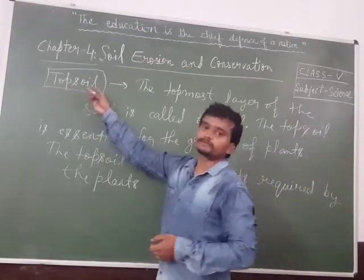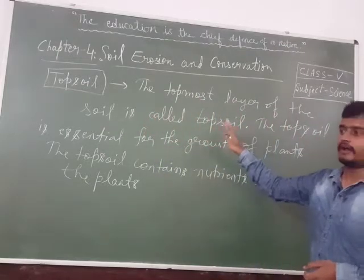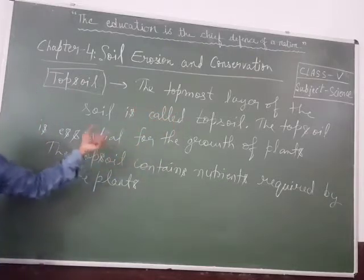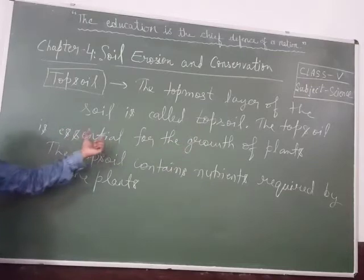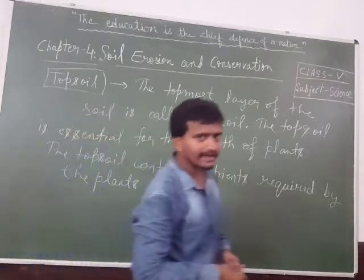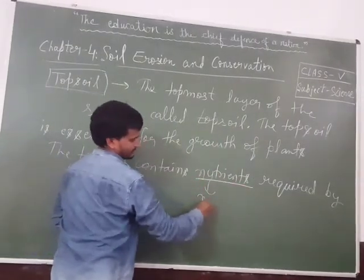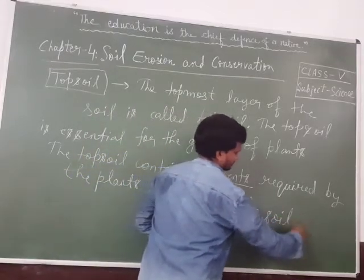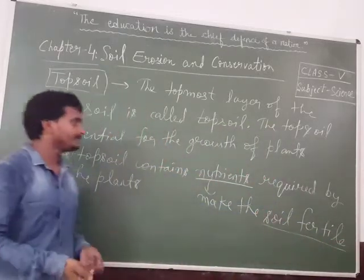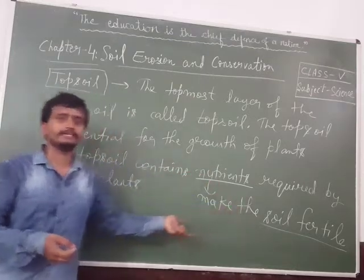Our next heading is topsoil. The topmost layer of the soil is called topsoil. Topsoil is essential for the growth of plants because it contains the nutrients required by plants. Nutrients make the soil fertile and enhance the development and growth of plants and trees much better.